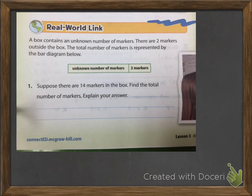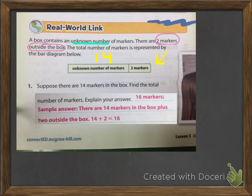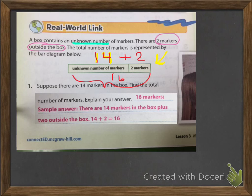Under the Real World link, it says a box contains an unknown number of markers. There are two markers outside the box, and the total number of markers is represented by the bar diagram. Suppose there are 14 markers in the box — we put 14 for the unknown number of markers in the box. Find the total number of markers: you have 14 markers in the box plus the two outside the box, so 14 plus 2 equals 16 markers total.